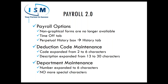The old benefit accrual button has been replaced with the Time Off tab. Deduction codes have been changed from two to six characters, and descriptions have gone from 13 to 30 characters. The same expansion applies to earnings code maintenance. Department maintenance has been expanded from two or four characters to six, but you can no longer use special characters — it must stay alphanumeric.